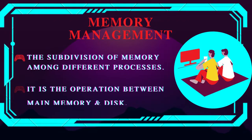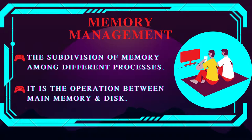Memory management — main memory can be considered as a large array of words or bytes, ranging in size from hundreds of thousands to billions of locations. Each word or byte has its own address. This means main memory is directly accessed by the CPU, and memory is subdivided among different processes.